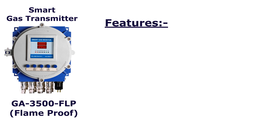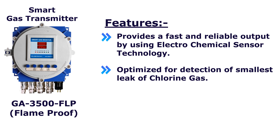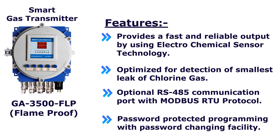Features of the GA 3500 flameproof detector: it provides a fast and reliable output using electrochemical sensor technology, optimized for detection of the smallest leak of chlorine gas. It also includes an optional RS-485 communication port with Modbus RTU protocol, and password-protected programming with a password changing facility.